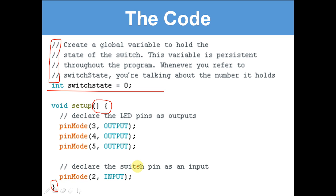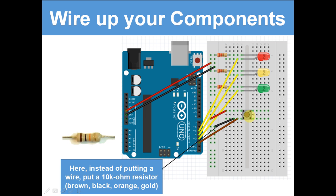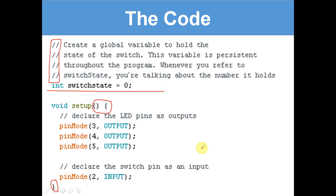Then declare the switch pin as an input - pinMode 2 input. So if we go back to the code, we've got a button here. When it's pressed, electricity will go to 2, and we've set it as an input. An input can read whether there's electricity going to that pin or not. Let's move on.